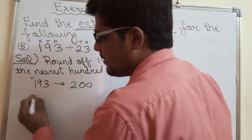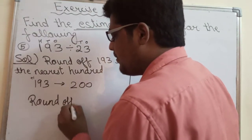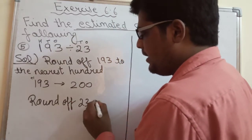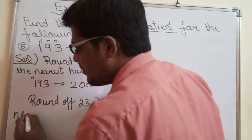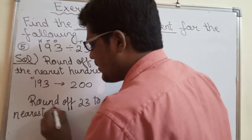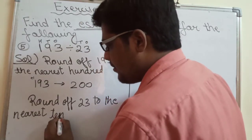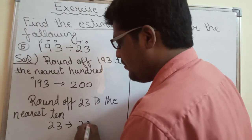Now we will round off 23 to the nearest ten. So 23 will be rounded off to 20.